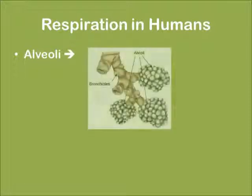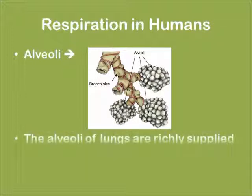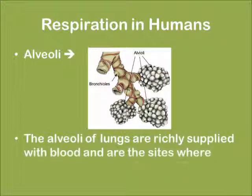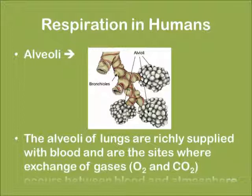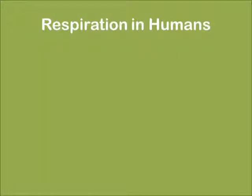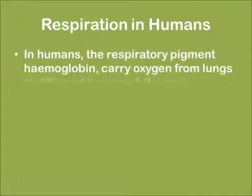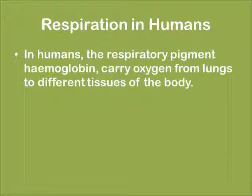Given is a picture of how alveoli look. Alveoli of the lungs are richly supplied with blood and these are the sites where exchange of gases occurs between the blood and the atmosphere. In humans, the respiratory pigment known as hemoglobin carries oxygen from the lungs to different tissues of the body.